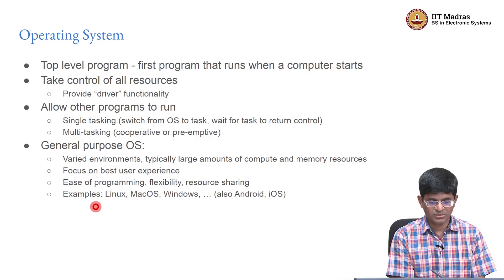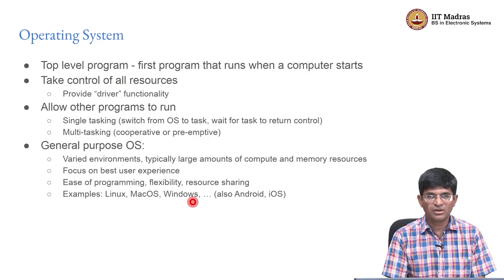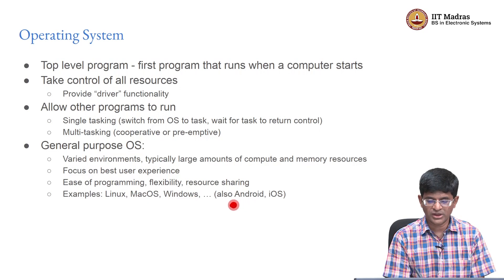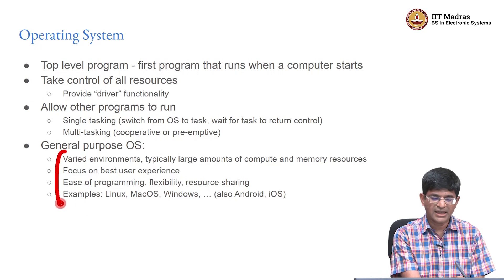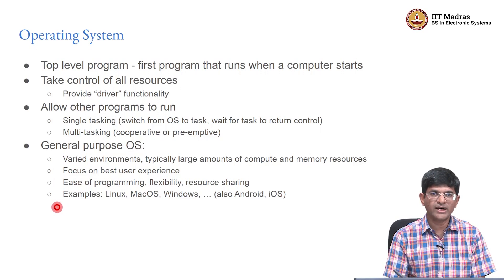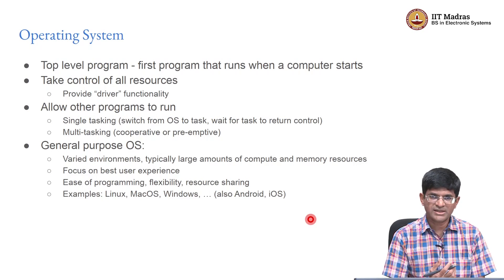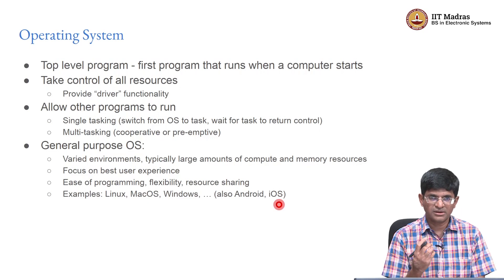Examples most of you will have encountered include Linux, Mac OS running on Apple systems, Windows on the majority of Intel-based PCs and slowly moving toward ARM-based laptops, and most of you will have encountered Android or iOS as phone operating systems. These are in a slightly more niche category — general purpose in their characteristics, but specialized for the usage context of communications devices, essentially phones. There are some aspects of real time operating systems that also come into play in phone-type operating systems.